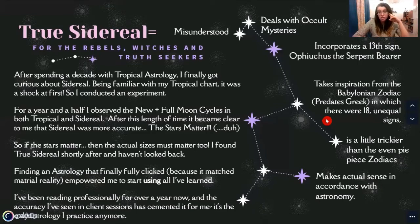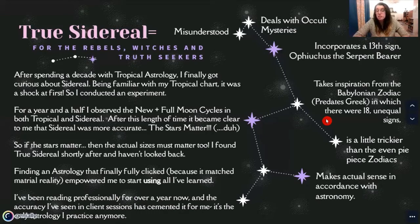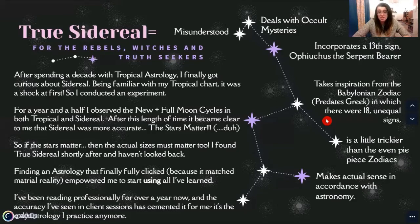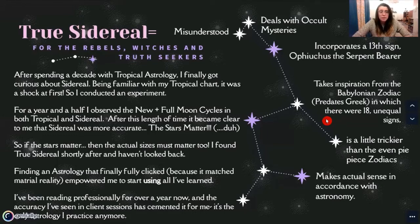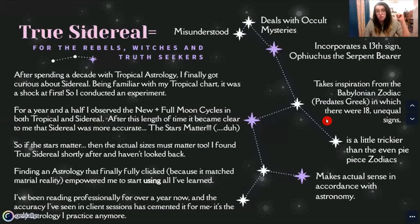Once I shifted my practice over to something that actually aligned with material reality, something really, really clicked in me. At that point, I started to use all of the information I'd been gathering for over a decade — about 12 years at that point — and I started doing professional readings for people. I've been doing that successfully for a year now. The kind of accuracy I'm seeing in client sessions, the way it speaks to stuff that really resonates — at this point, it's just cemented it: this is the only astrology that I practice.